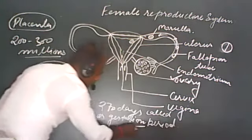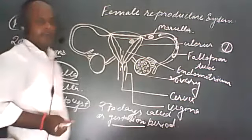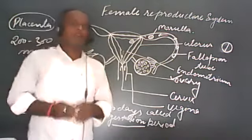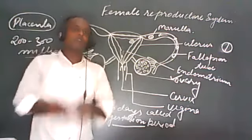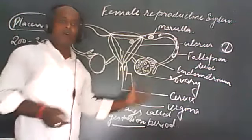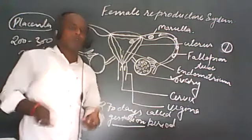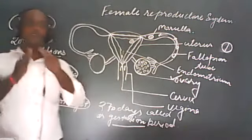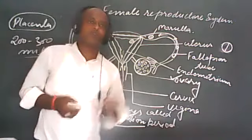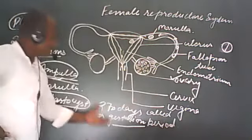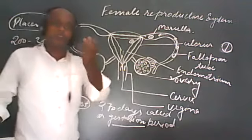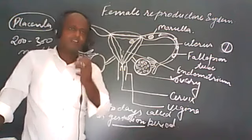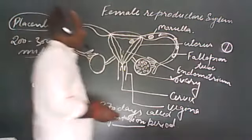The gestation period is the pregnancy period. In the case of human beings it is about 270 days — different organisms have different time periods of pregnancy. For convenience, the gestation period is calculated as near about 40 weeks.